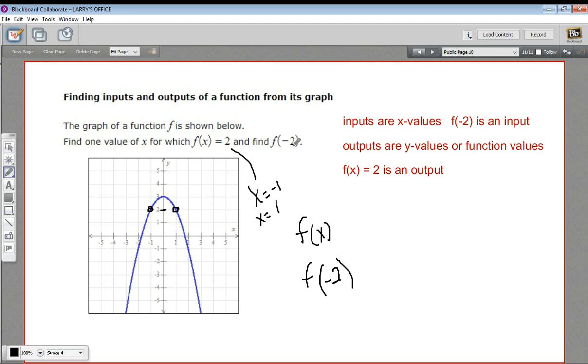And then it says find f of negative 2. So we find the x value of negative 2. Here's negative 1, negative 2. So it looks like it's pretty close to negative 1. So f of x here, or f of negative 2, equals negative 1, or thereabouts. Hard to see on that graph. So that is a little bit of work with inputs and outputs of functions.